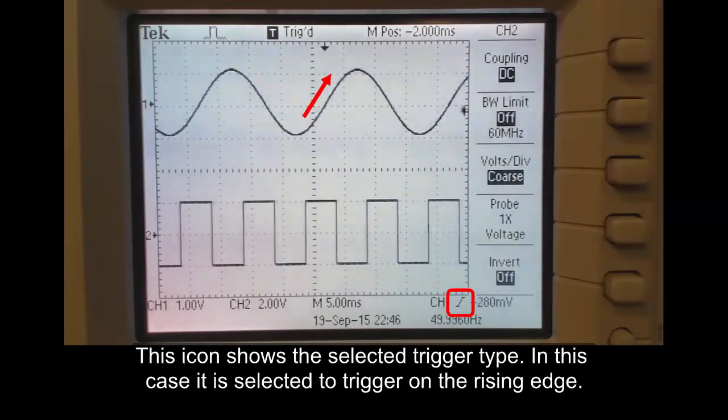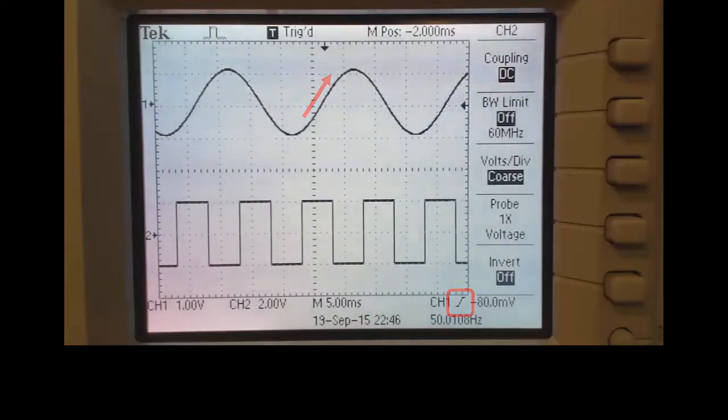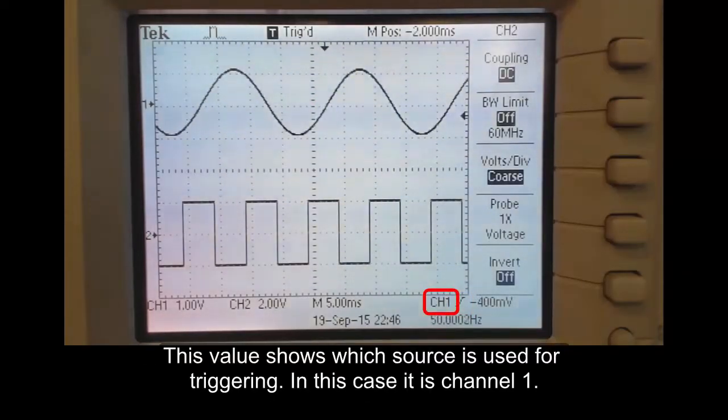In this case it is selected to trigger on a rising edge. This value shows which source is used for triggering. In this case it is channel 1.